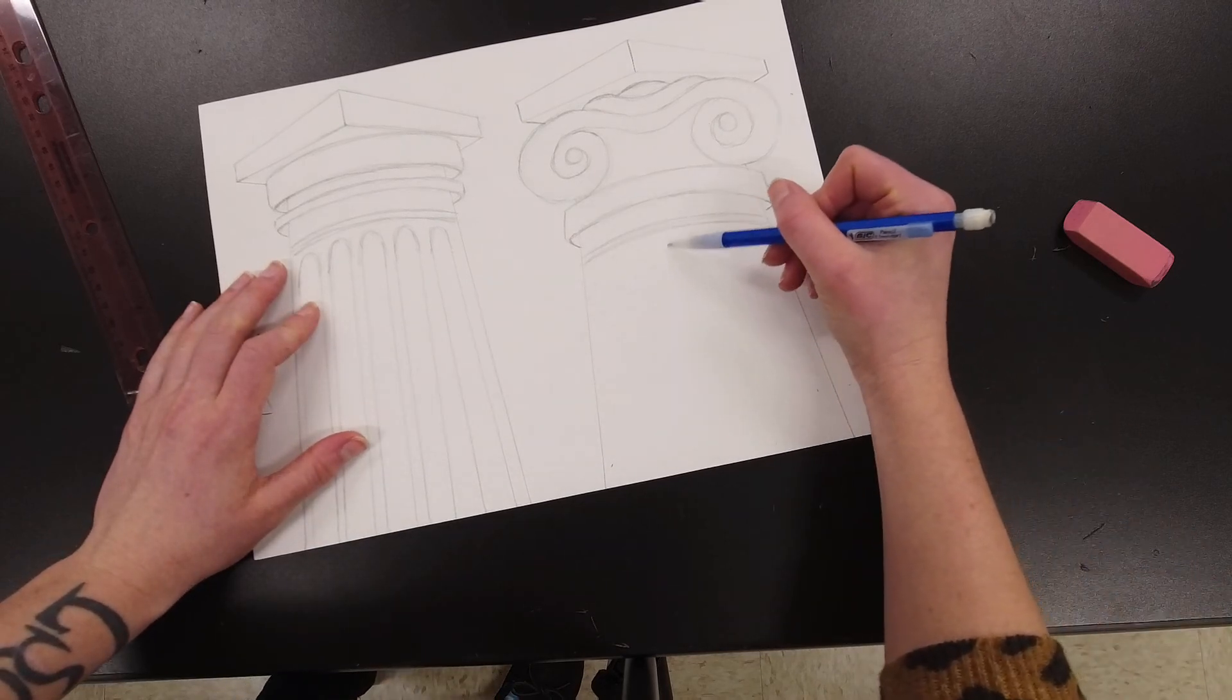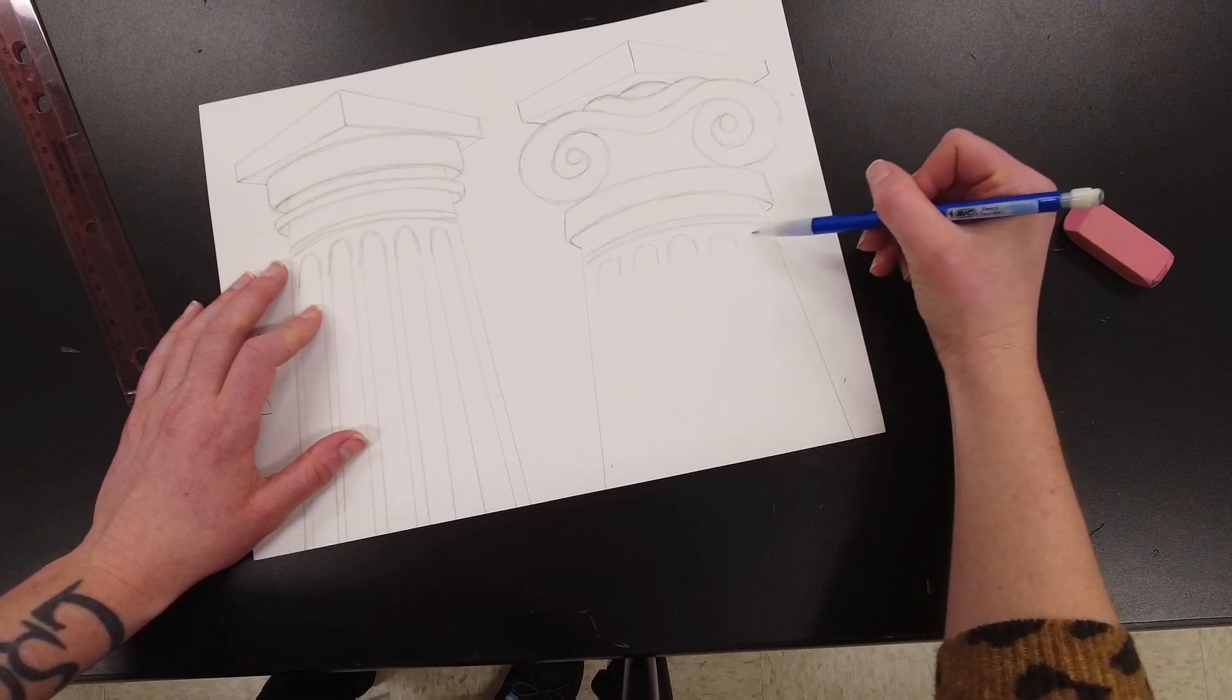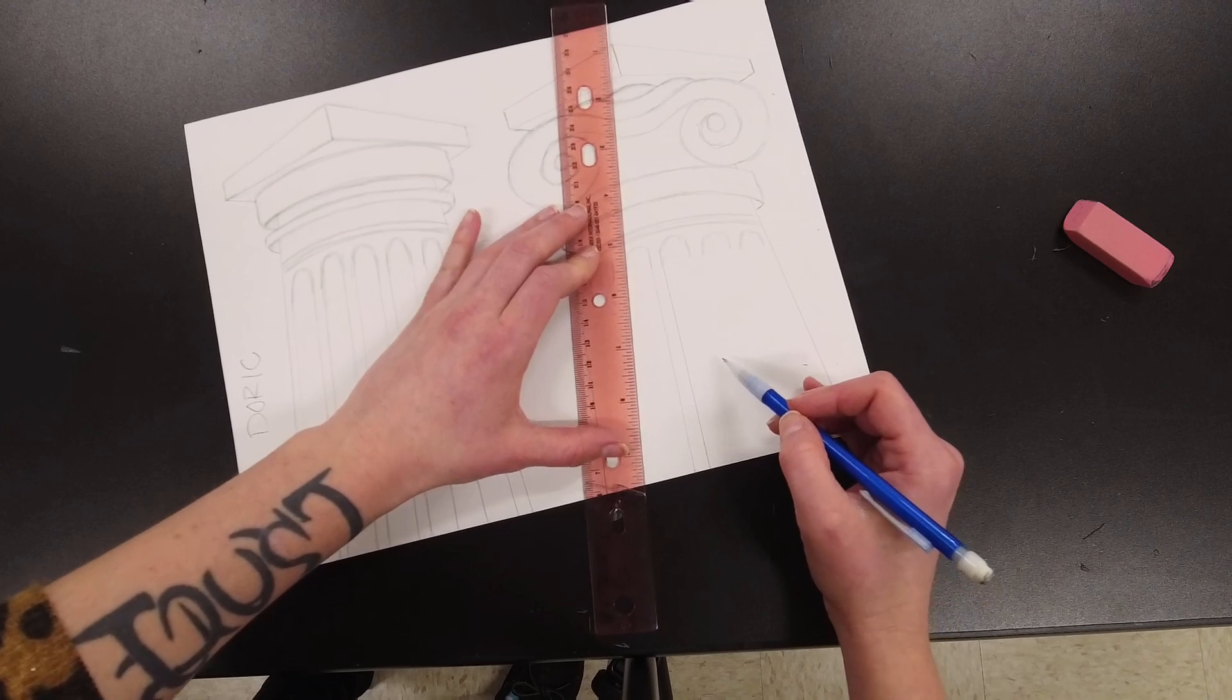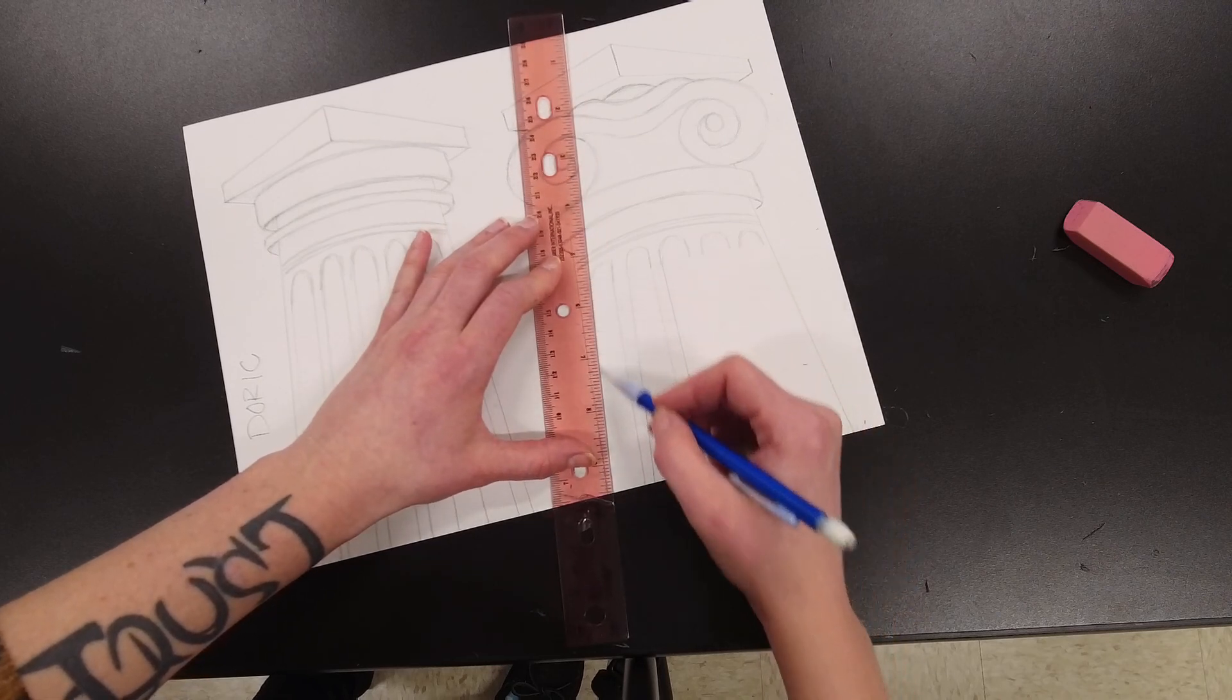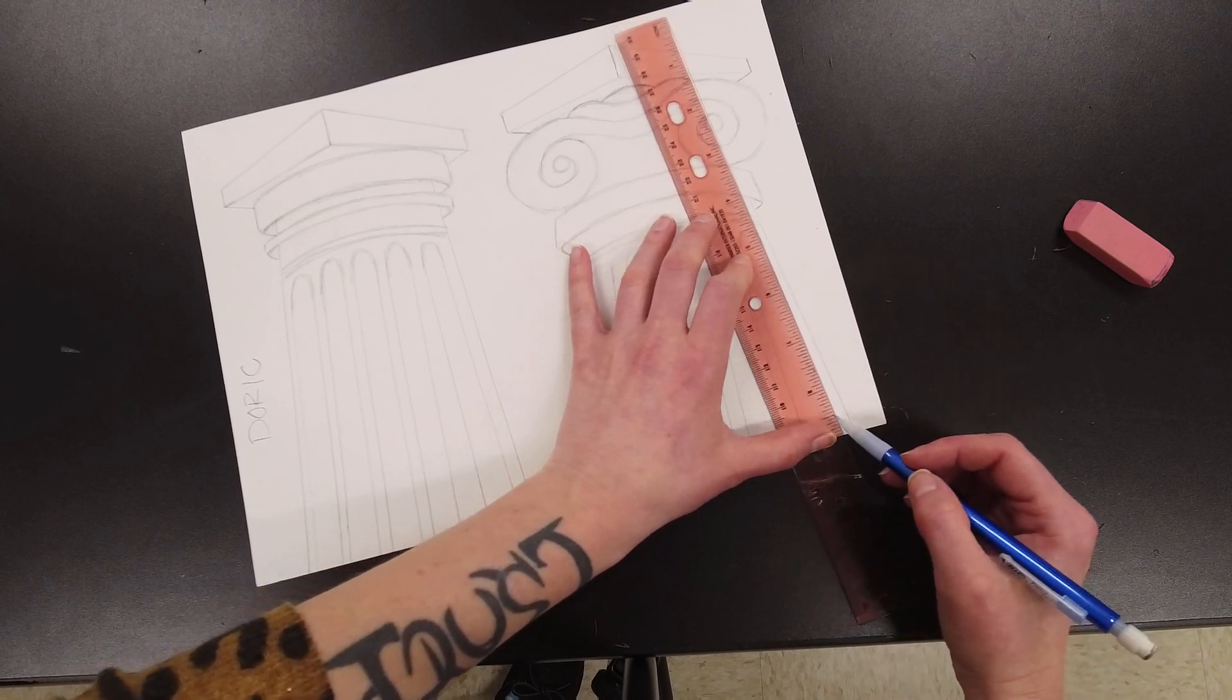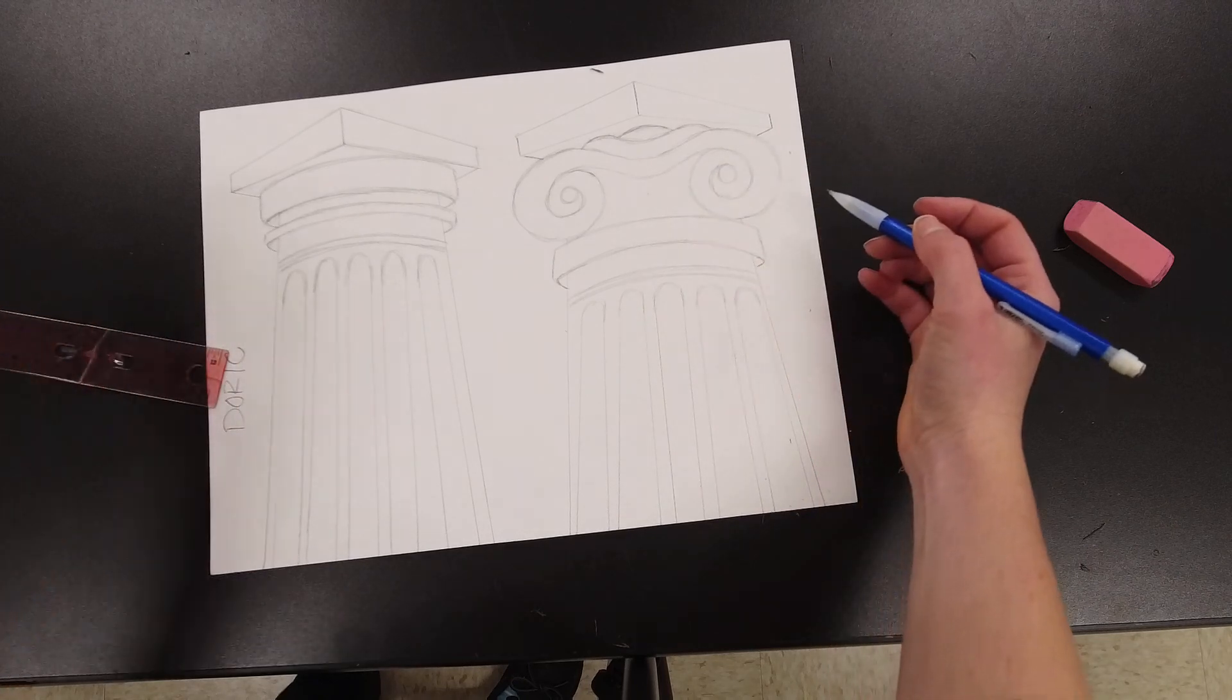So now, again, on the flutes, I'm just going to start them the same way with my little upside-down U's, kind of trying to space them out evenly. Then I would use my ruler to connect those on down. So that might be an example of an ionic. But once again, if I wanted to add some detail in here, some little ovals and more stripes and more swirls, I absolutely could.